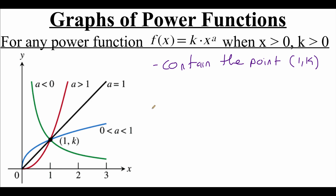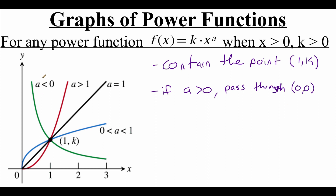If we focus specifically on our red graph, our black graph, and our blue graph — that's where all of our a values are positive — as these graphs come up into the first quadrant, they all pass through the origin. And if we look at that green graph, where our a value is negative, that graph is going to be asymptotic to both of our axes. So it would trace our y-axis up and trace our x-axis out to the right-hand side.